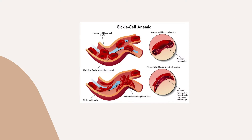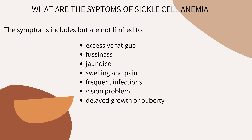This can cause pain and tissue damage. The diagram above explains what sickle cell means. What are the symptoms of sickle cell anemia? The symptoms include but are not limited to excessive fatigue or irritability from anemia, fussiness in babies, jaundice — which is yellowing of the eyes and skin — swelling and pain in hands and feet, frequent infections, vision problems caused by tissue damage, and delayed growth or puberty.